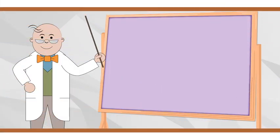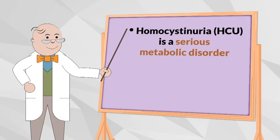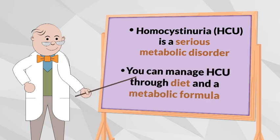To review, HCU is a serious inherited metabolic disorder that can lead to a number of problems if unmanaged. You can manage it with a protein-restricted diet and a special metabolic formula.